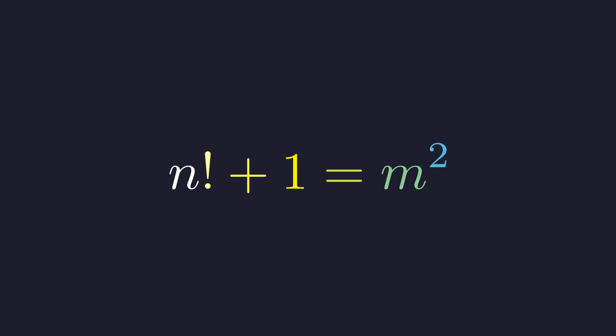We're exploring a famous unsolved riddle in number theory: for which positive integers n is n factorial plus 1 a perfect square? Let's start by doing what any mathematician would. Test the first few numbers and see if we can find any solutions.